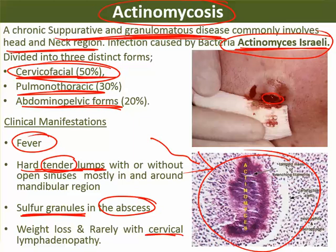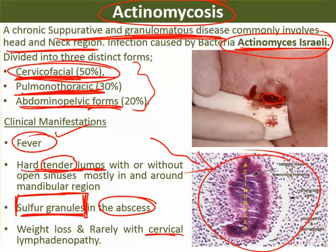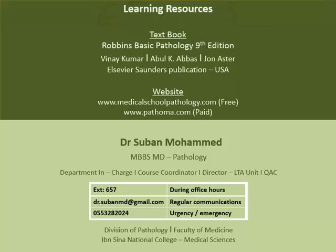To summarize actinomycosis: it is caused by Actinomyces israelii and produces granulomatous inflammation. There are three forms — cervicofacial, thoracic, and abdominal-pelvic. The most characteristic feature is sulfur granules — very dark-colored granules visible in the ulcer. The tissue shows bacteria surrounded by inflammatory cells. This concludes the topic of actinomycosis and tuberculosis.